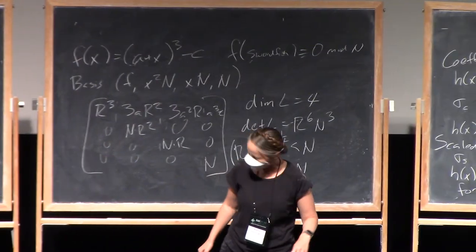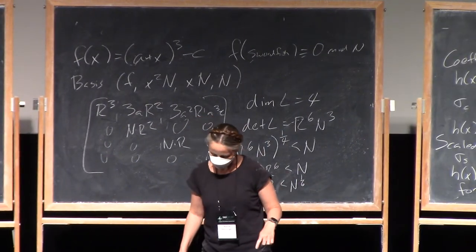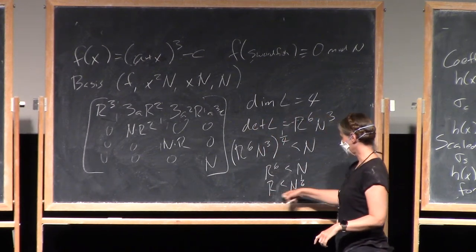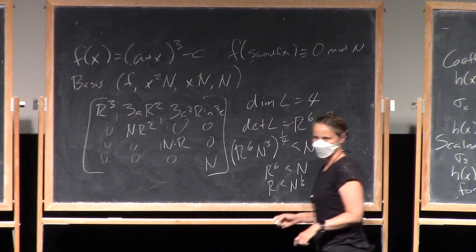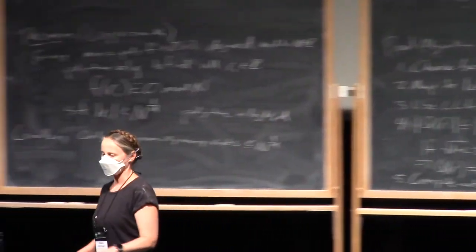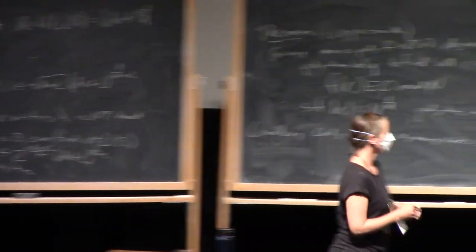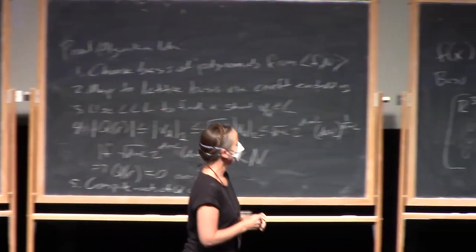So this means that for any root that's less than n to the one sixth, this will find it. I'll just be explicit and say that I carefully chose swordfish to have the right length with respect to the modulus.